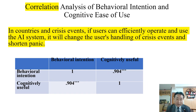H5 addresses the correlation of ease of use. In national crisis events, if users can efficiently operate and use the AI systems, it will change the user's handling of crisis events and improve their response techniques.